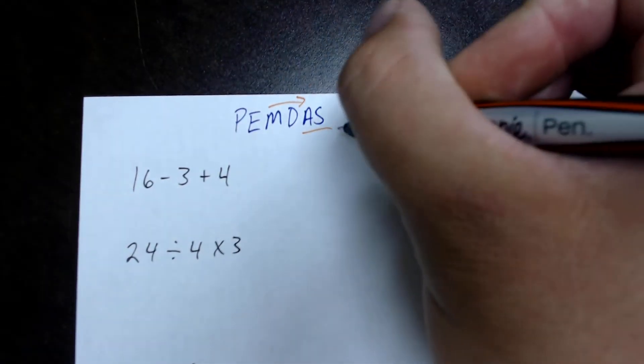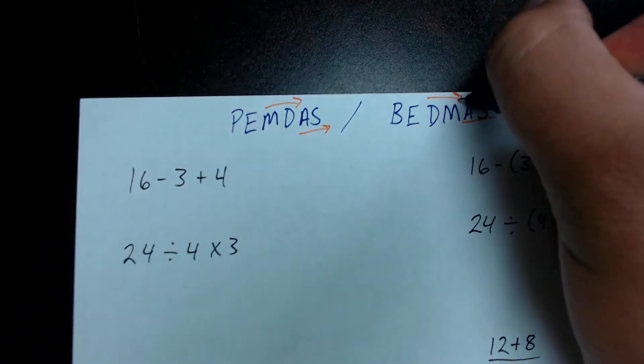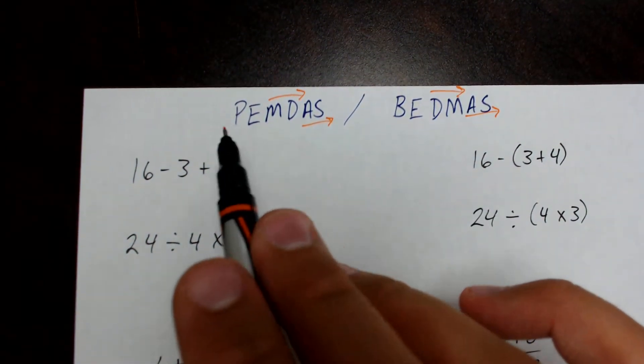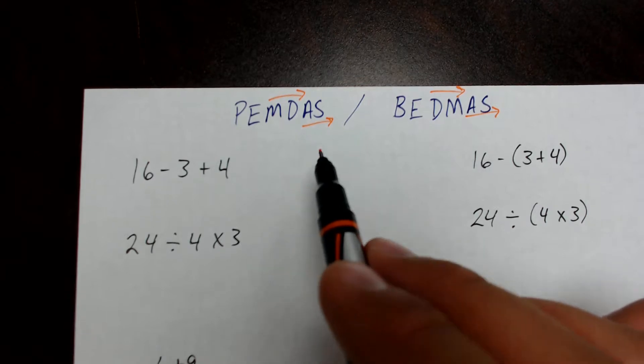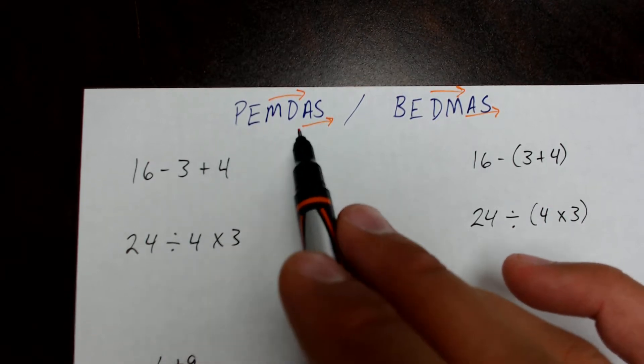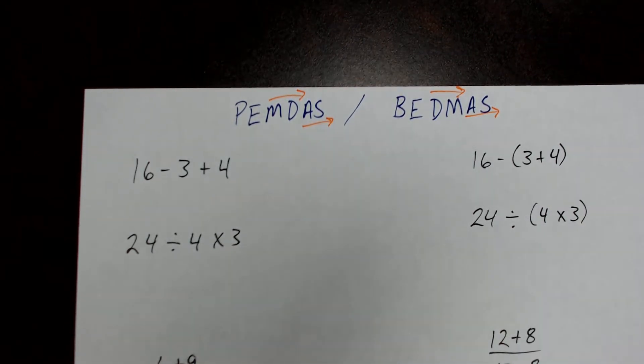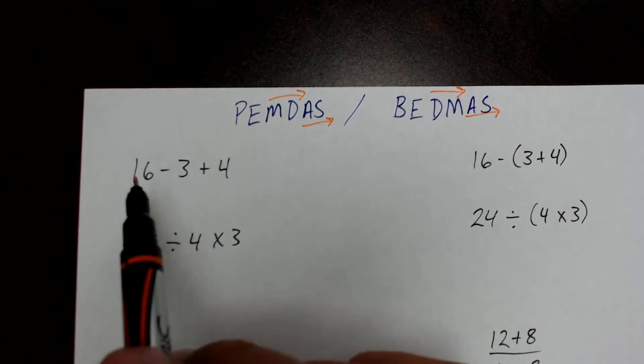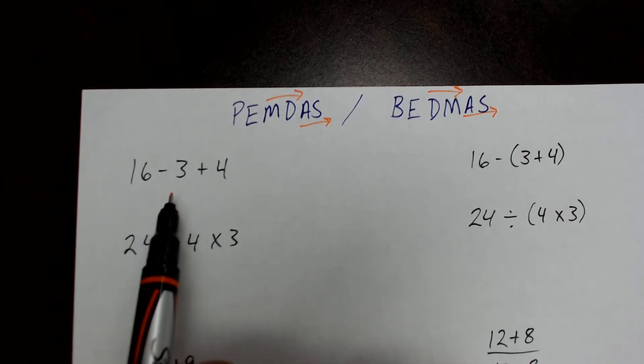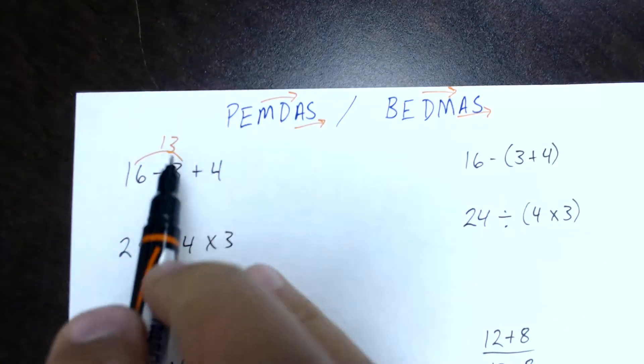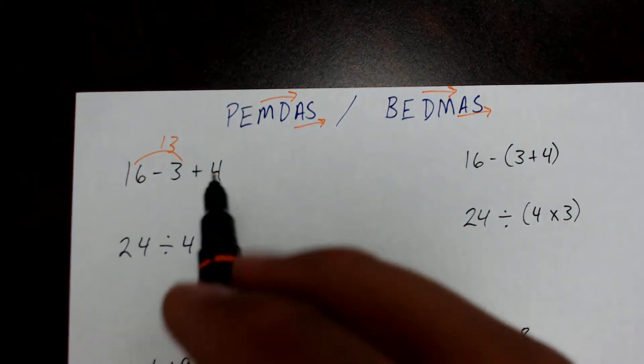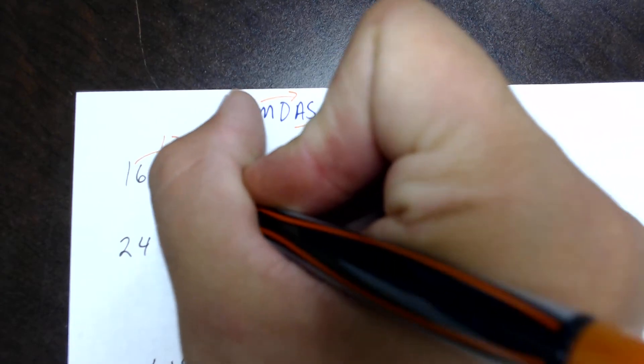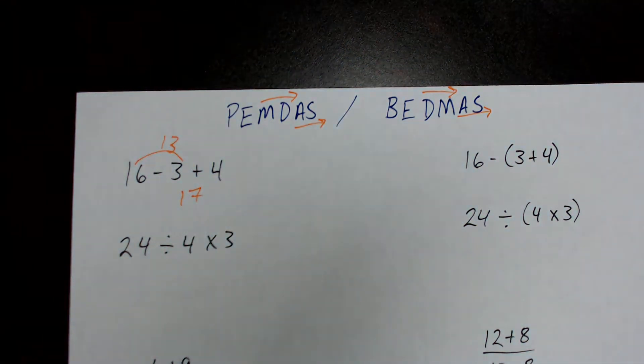So I like to draw these arrows whenever I put these acronyms down. And if you need to, you can go ahead and write this down on your paper or on your test forms whenever you're taking a test. You can go ahead and put this off to the side to remind yourself. So I'm going to go ahead and work from left to right. 16 minus 3 gives me 13. And then 13 plus 4 gives me 17. So my answer for this first problem is 17.